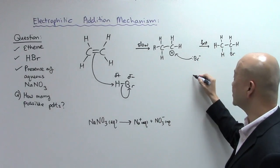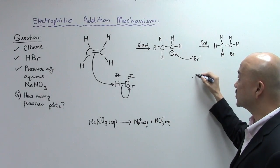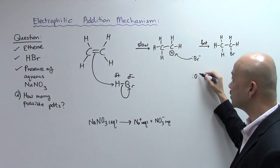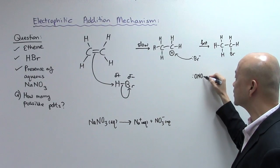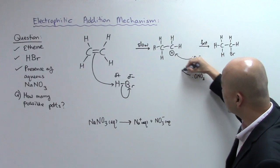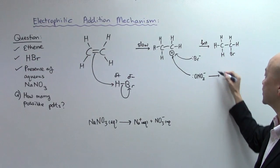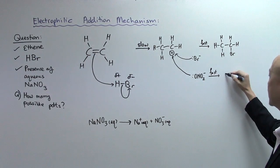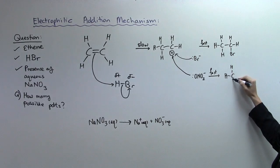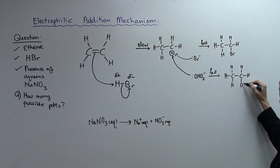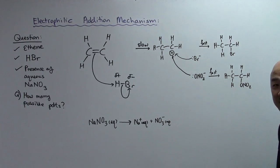So it will also have the potential to attack this electron deficient carbon. I'm going to rearrange NO3- to become ONO2- to show you that the lone pair belongs to the oxygen here. So you're going to have the second product that looks like this. ONO2. So this is your second product.